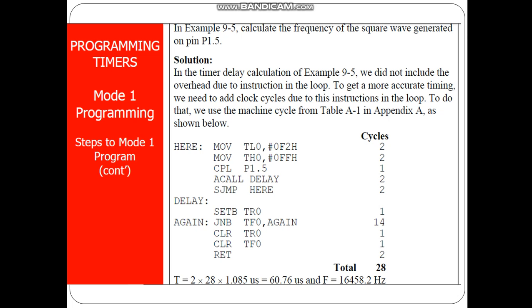Once there is an overflow, the timer control bit is cleared — it takes one machine cycle. Then CLR TF0 takes one machine cycle. And the RET instruction takes two machine cycles. So the total number of machine cycles required for the execution of this program is 28.